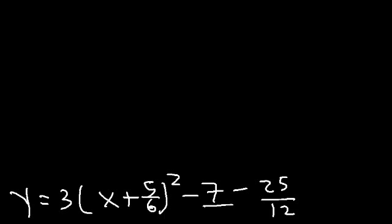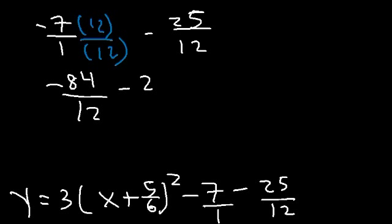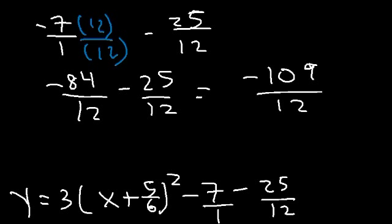We need to get common denominators. So let's multiply 7 over 1 by 12 over 12. 7 times 10 is 70, 7 times 2 is 14, so 7 times 12 is 84. This gives negative 84 over 12, minus 25 over 12. Adding these two gives negative 109 over 12.